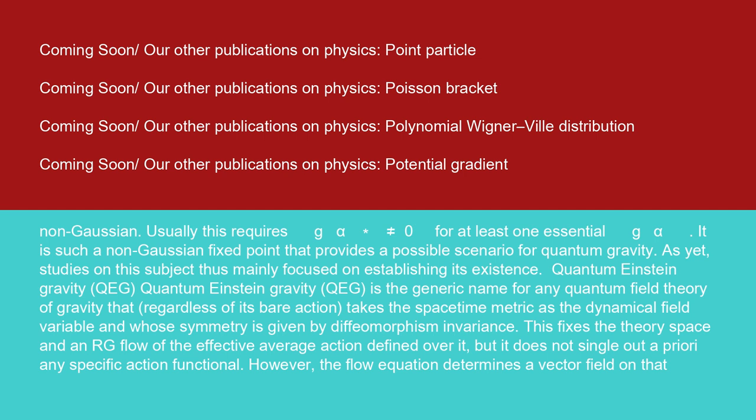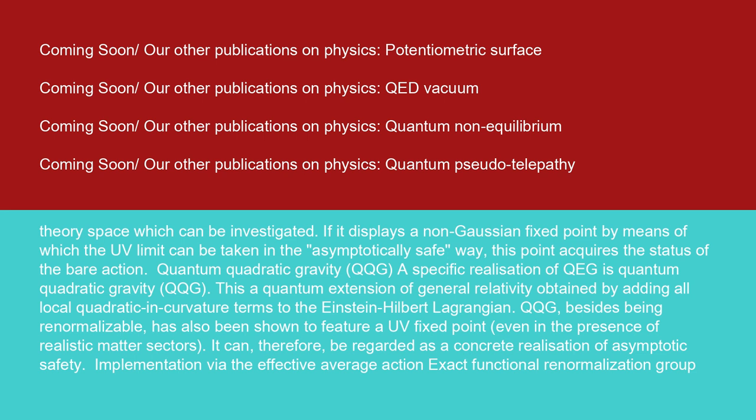Quantum Einstein gravity QEG: quantum Einstein gravity QEG is the generic name for any quantum field theory of gravity that, regardless of its bare action, takes the space-time metric as the dynamical field variable and whose symmetry is given by diffeomorphism invariance. This fixes the theory space and an RG flow of the effective average action defined over it, but it does not single out a priori any specific action functional. However, the flow equation determines a vector field on that theory space which can be investigated. If it displays a non-Gaussian fixed point by means of which the UV limit can be taken in the asymptotically safe way, this point acquires the status of the bare action.